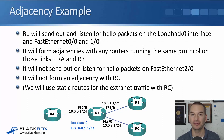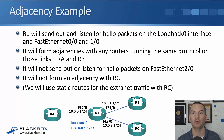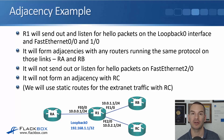R1 will send out and listen for hello packets on loopback 0 and FastEthernet 0/0 and 1/0 because those are the interfaces with the routing protocol enabled. It will form adjacencies with any routers running that same routing protocol found on those links. Since the routing protocol is also enabled on RA and RB on their interfaces facing R1, those routers will discover each other through hello packets, form adjacencies, and share routing updates. R1 will not send or listen for hello packets on FastEthernet 2/0 since the routing protocol was not enabled there, so it will not form an adjacency with RC.